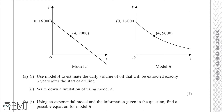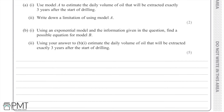Looking back at the graph, we can see that T equals 4 at a known point, so T equals 3 will be roughly around there. The best approach is to calculate the gradient. The gradient equals the change in Y coordinates divided by the change in X coordinates, so that's 9,000 minus 16,000 divided by 4 minus 0, which equals negative 1,750.